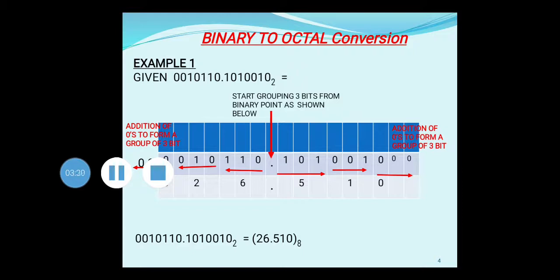Now you will start grouping from the decimal point, as shown by the arrows. The decimal point is marked, and from it, the integer part grouping starts towards the left in groups of 3 bits. That gives us 110, 010, and one bit remaining — just a 0. Since only a single bit is left, you need 2 more bits to form a group of 3, so you add 2 zeros on the left side.